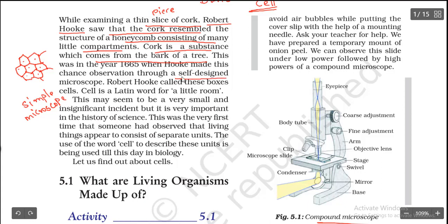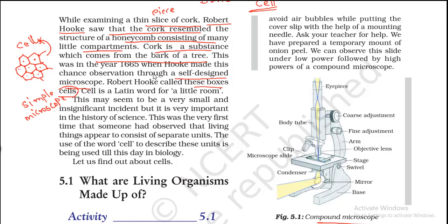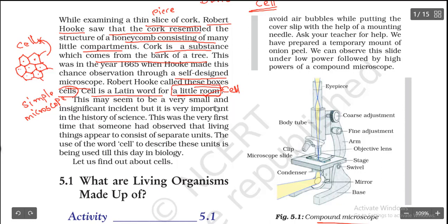This microscope was self-designed by Robert Hooke himself. He called these box-like structures 'cells.' He named these compartments 'cell' because in Latin, 'cell' means a little room. This may seem like a small and simple incident, but it is very important in the history of science.